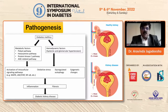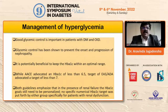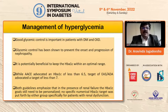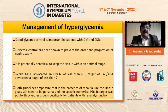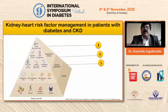Coming to the management of hyperglycemia, good glycemic control is important in patients with diabetes and CKD. Glycemic control has been shown to prevent the onset and progression of nephropathy. It is potentially beneficial to keep HbA1C within an optimal range. While AACE advocated an HbA1C of less than 6.5%, EASD and ADA advocate less than 7%. Both guidelines emphasize that in the presence of renal failure, HbA1C goals still need to be personalized, with no specific numerical target put forth for patients with renal dysfunction.